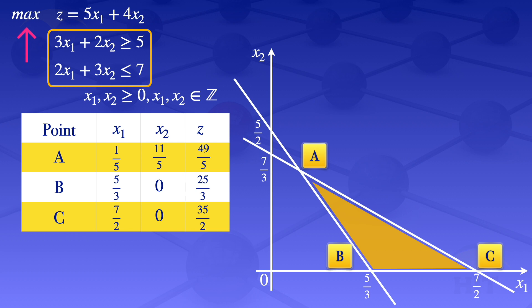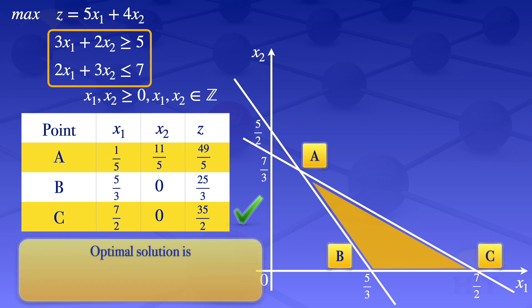This is a maximization problem, so we look for the maximum z, which is 35/2. The optimal solution is z equals 35/2, occurring when x1 equals 7/2 and x2 equals 0. This solution is not integral because x1 is not an integer, but the problem requires integer values of x1 and x2.